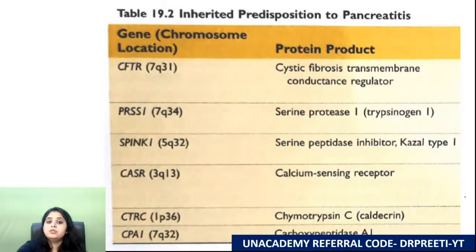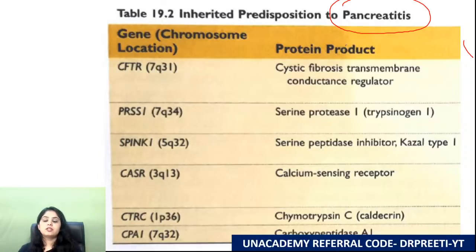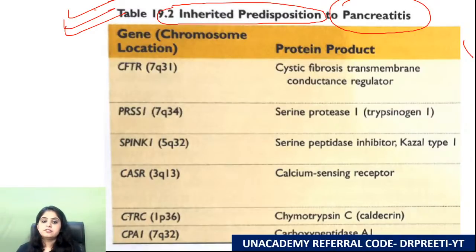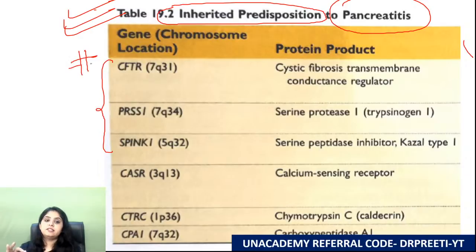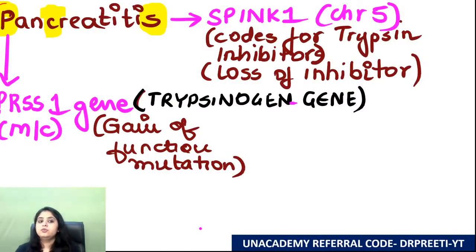Final table: inherited predisposition to pancreatitis. While pancreatitis brings inflammation to mind, some cases are hereditary with specific gene mutations. There are three main genes to know; the most important are the first and last: PRSS1 and SPINK1.